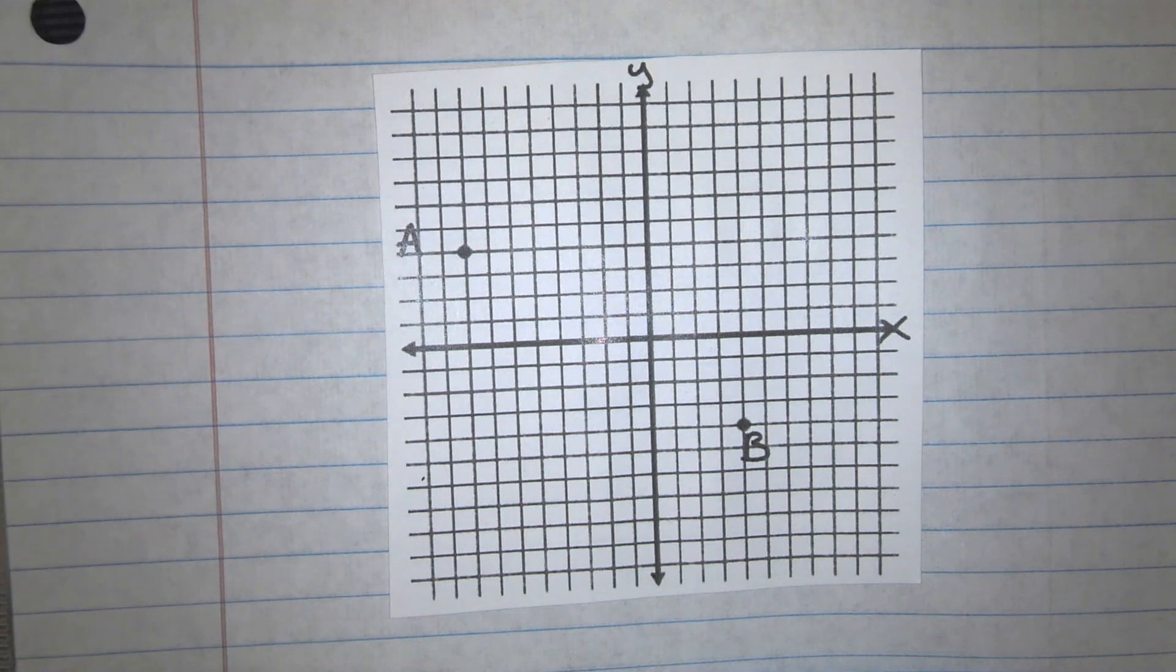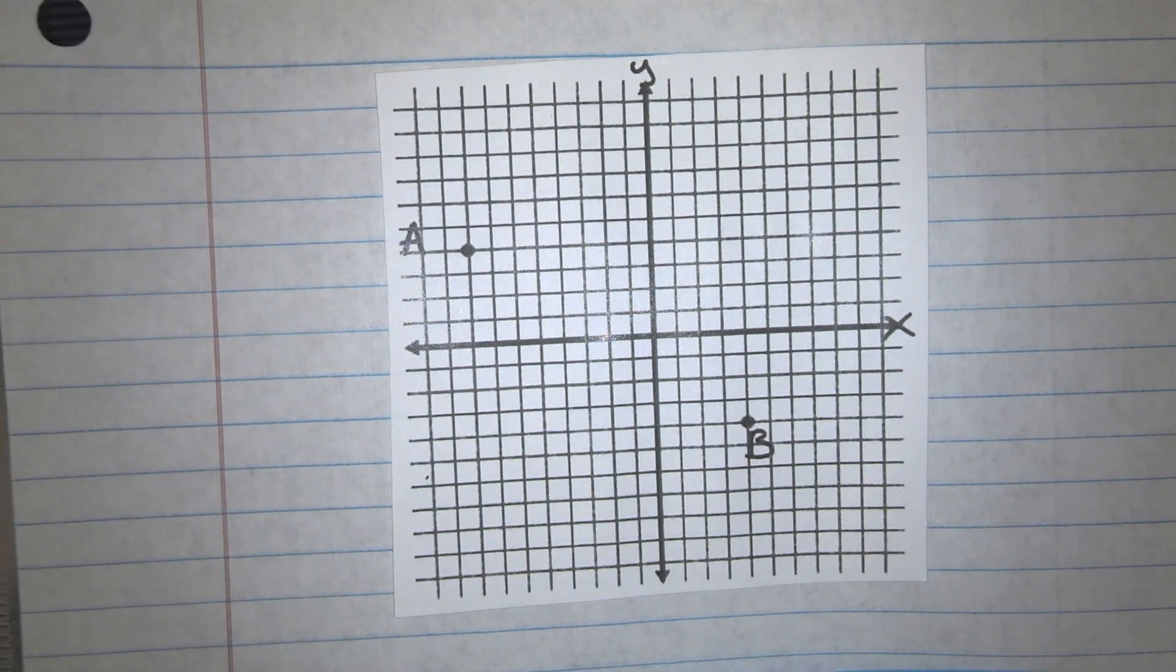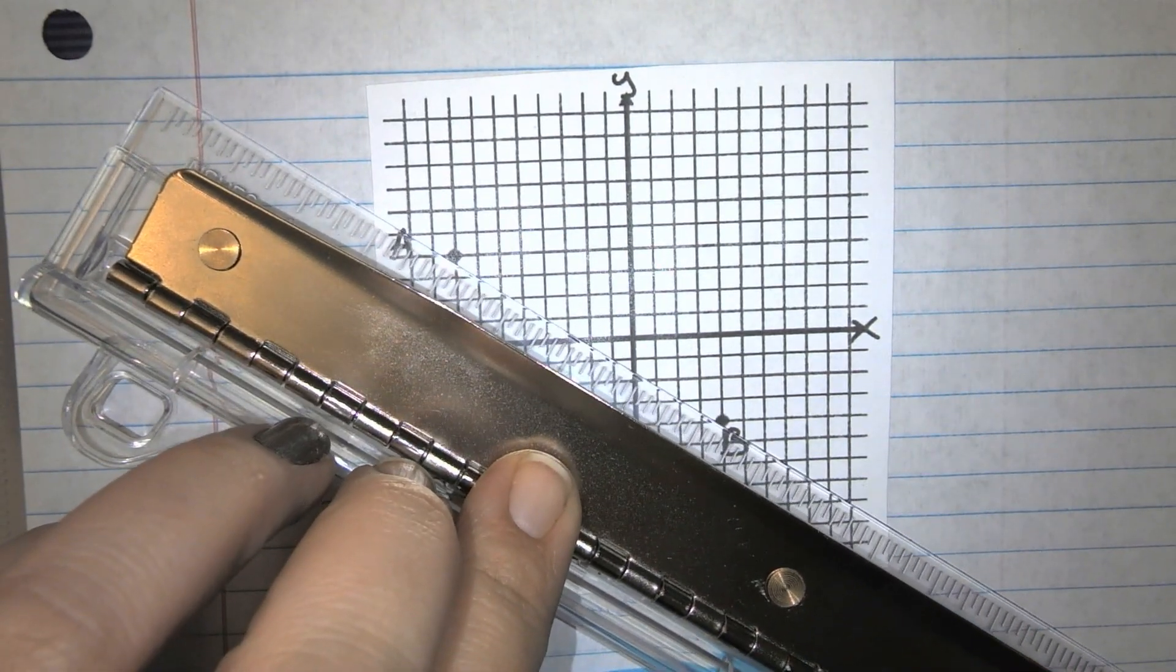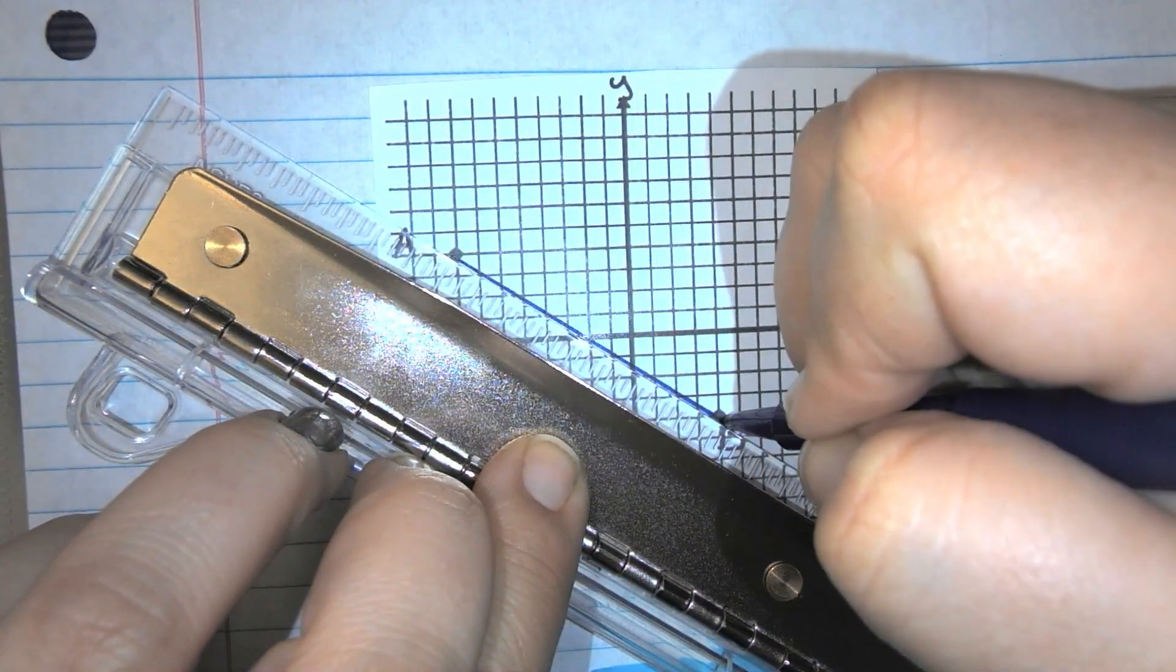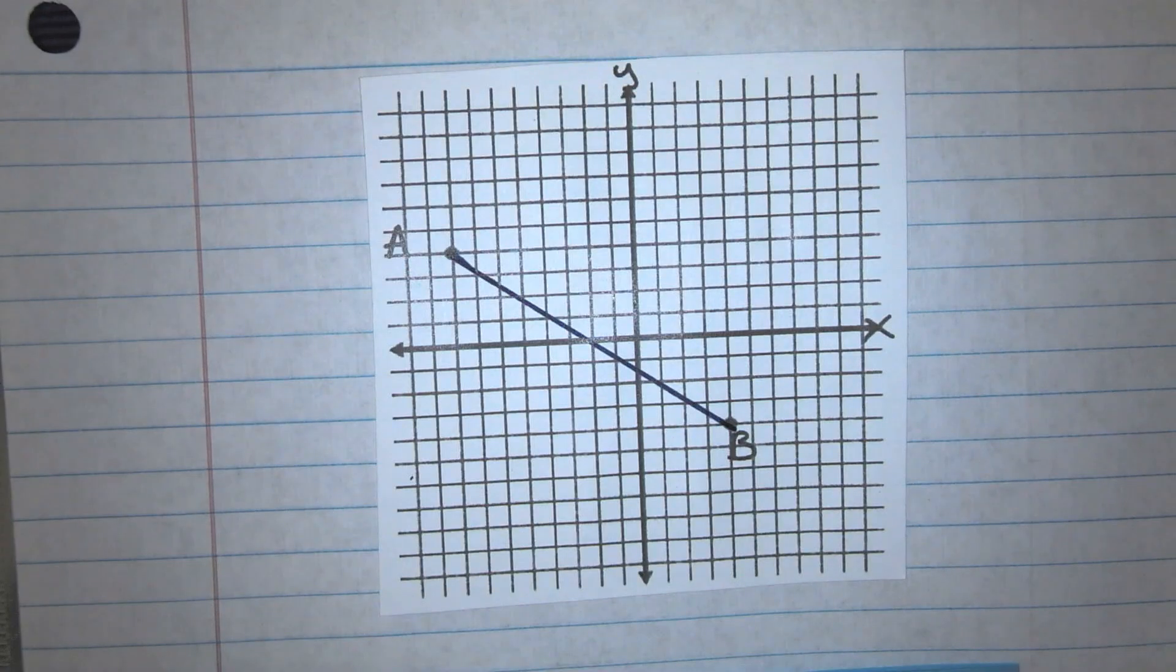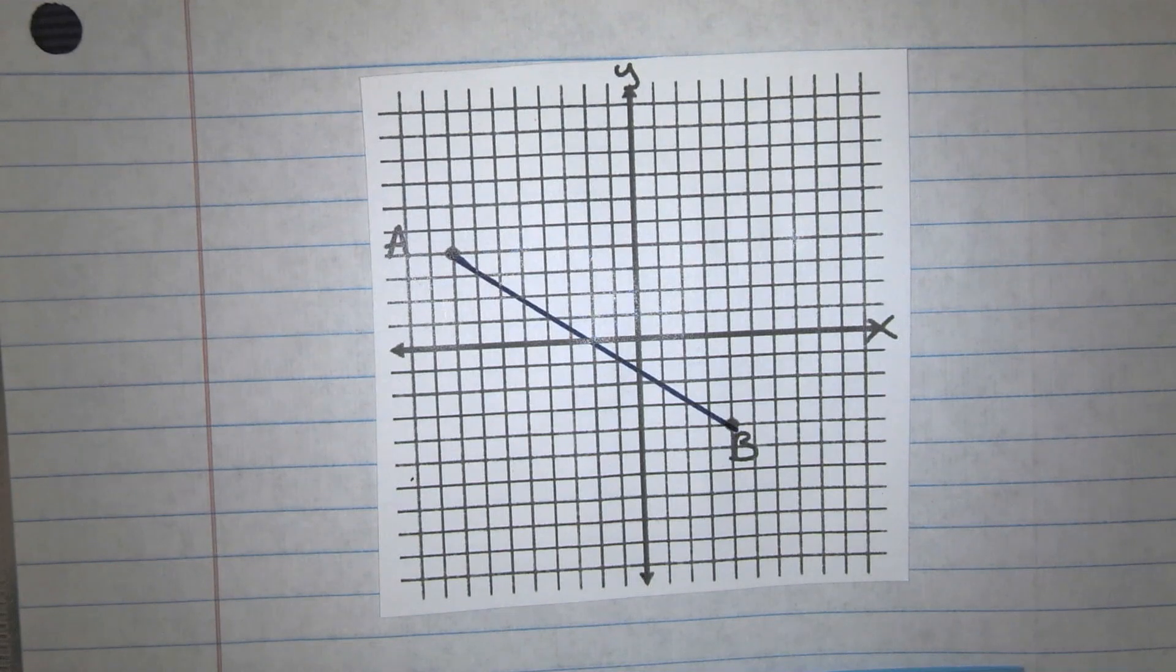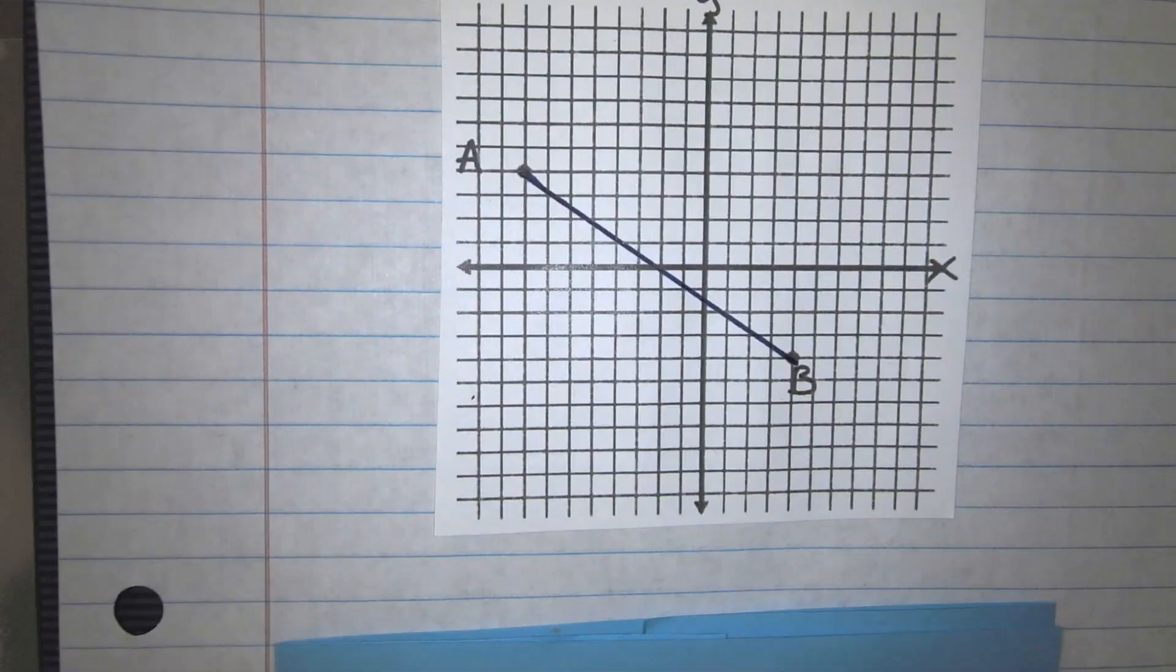All right. So, after you have that done, let's go ahead and connect A to B and make a line segment. Because we're going to be looking at calculating the distance from A to B. So we're going to learn two different methods to do that. Both of them get us the same answer. Sometimes one will make more sense than the other, depending on what kind of problem you're looking at.